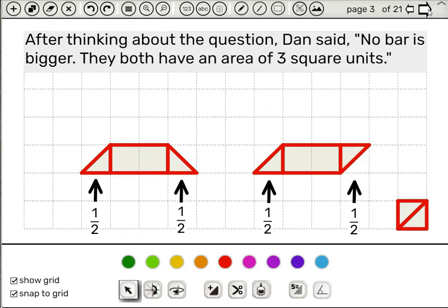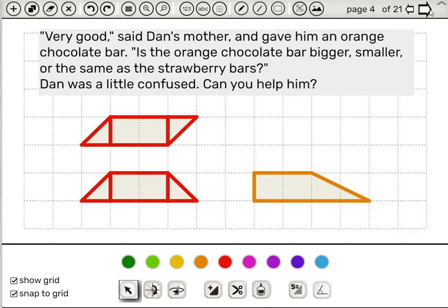And we continue reading in class. After thinking about the question, Dan said, no bar is bigger. They both have the area of 3 square units. And we see the 2 plus half plus half. The story continues. Very good, said Dan's mother, and gave him an orange chocolate bar. Is the orange chocolate bar bigger, smaller, or the same as the strawberry bars? Dan was a little confused. Can you help him?